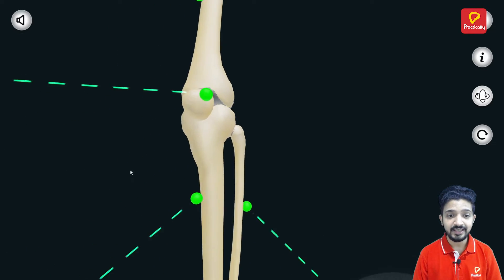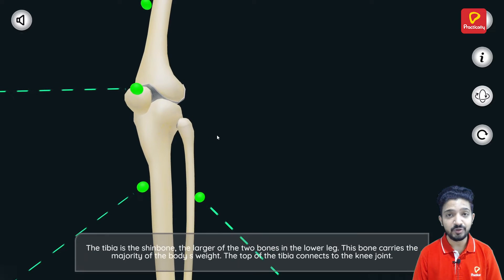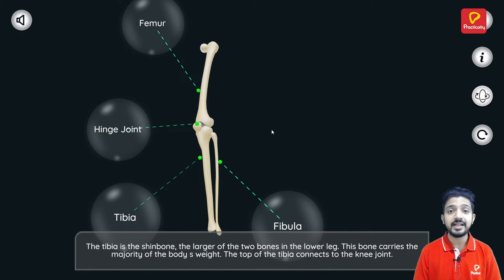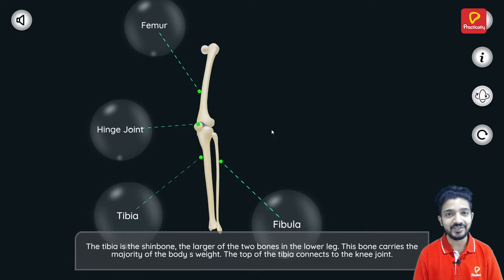So here is the hinge joint which allows the motion only in the back and forth direction. Another example of hinge joint is the elbow joint which also allows the back and forth movement, and it is very similar to that of the hinge of the door which opens and closes. Hence, it is called the hinge joint.